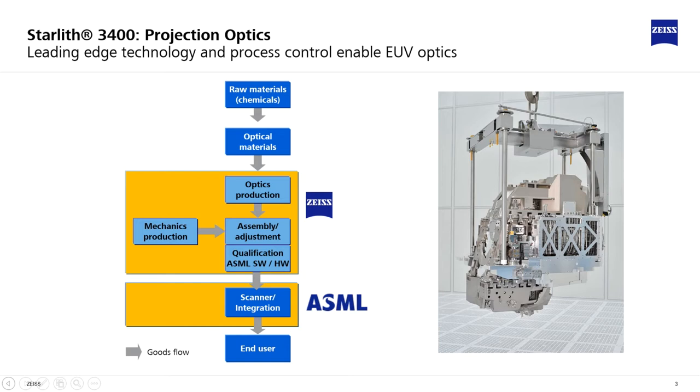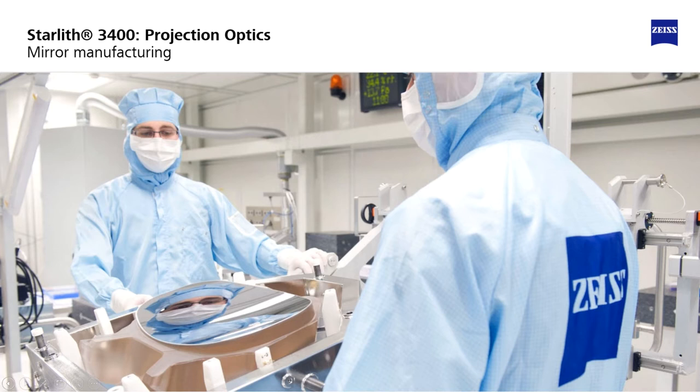After the raw optical material is produced at the supplier, the blank material arrives at the factory at size. The first production step that the blank material sees is the optics production. Let's have a closer look at that.